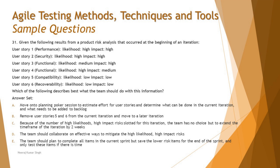Always make sure you understand the question and the data provided before jumping to the options. Until you understand the expectations of the question, you will not be able to answer it. The question asks you to select two answers from five options — A, B, C, D, E. The question asks: which of the following best describes what the team should do with this information?